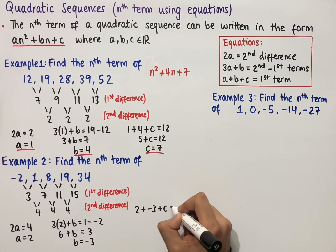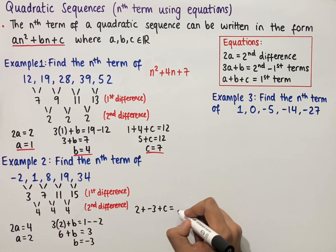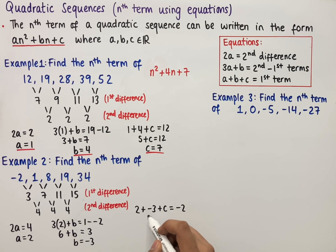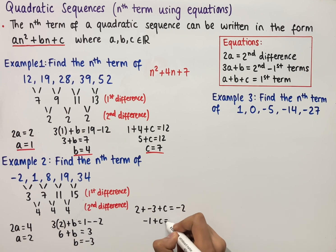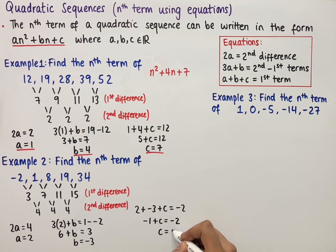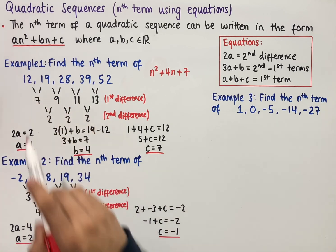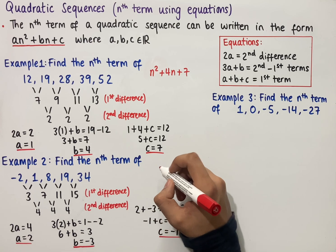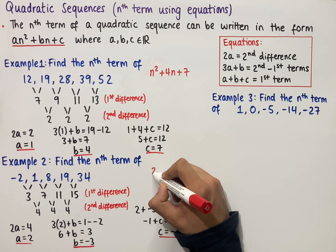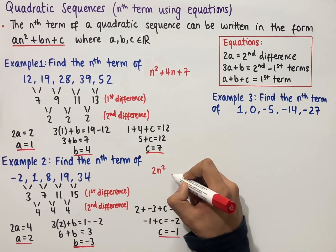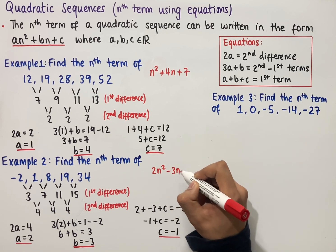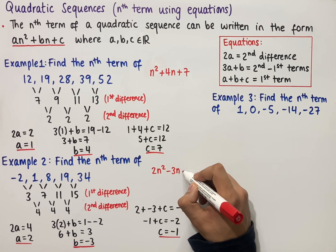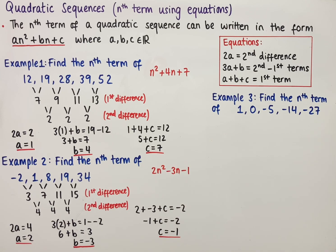So 2 plus minus 3 plus c equals minus 2, which simplifies to minus 1 plus c equals minus 2. Solving for c gives us c equals minus 1. Now that we have the values of a, b and c, we can write the nth term as 2n squared minus 3n minus 1. And this is the nth term of this sequence.